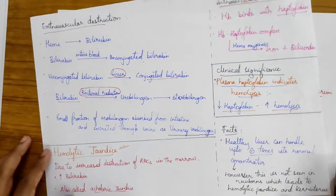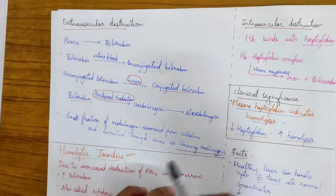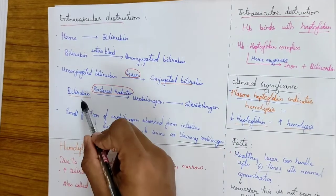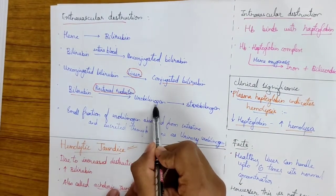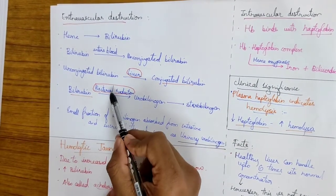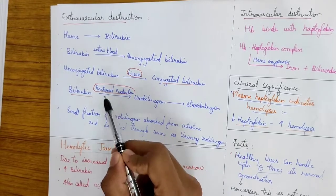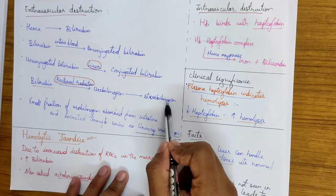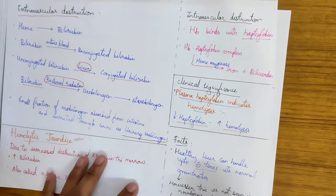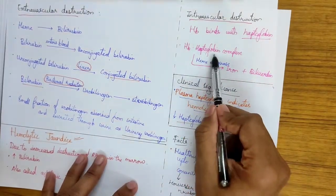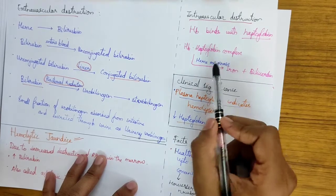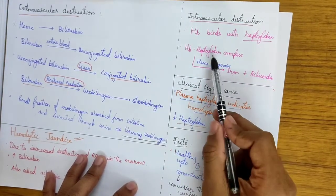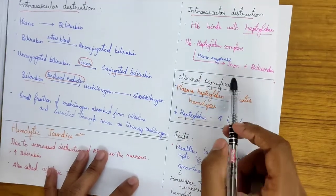I have written the same thing in this page also. Only thing to note here is the bilirubin is converted into urobilinogen due to the bacterial reduction present in the intestine. The stercobilinogen gives the color of the stool. And the HB-haptoglobin complex which is formed in the blood is converted into iron and biliverdin due to the enzyme heme oxygenase in the liver.